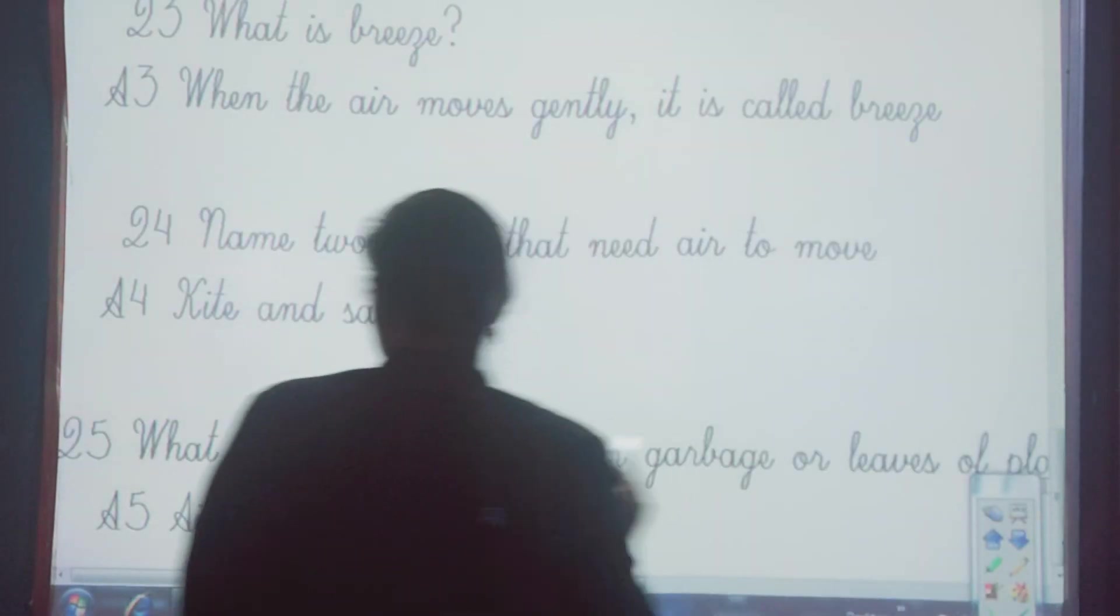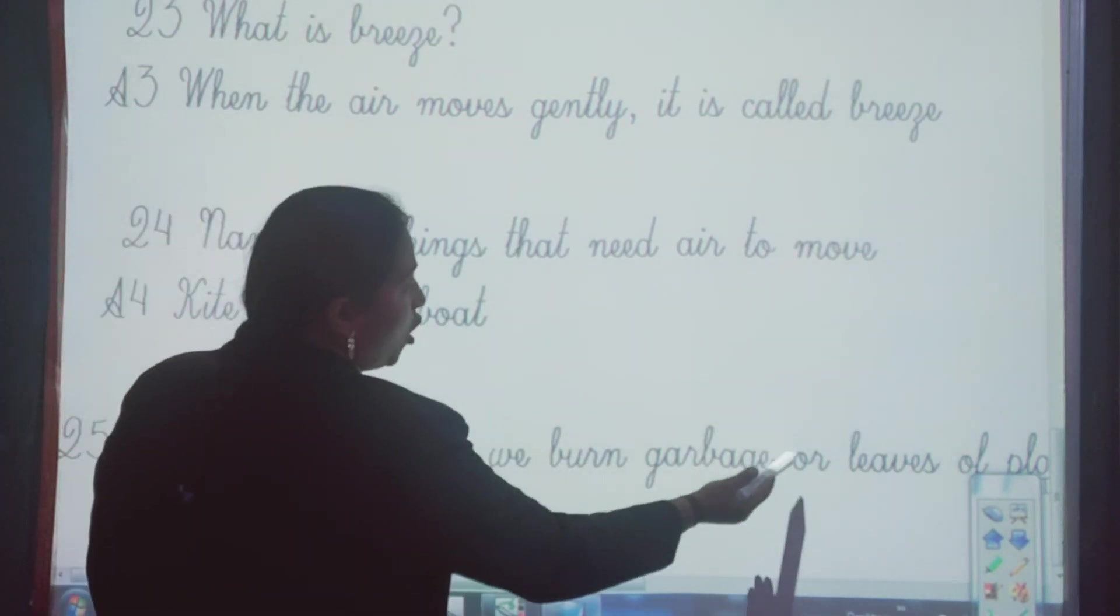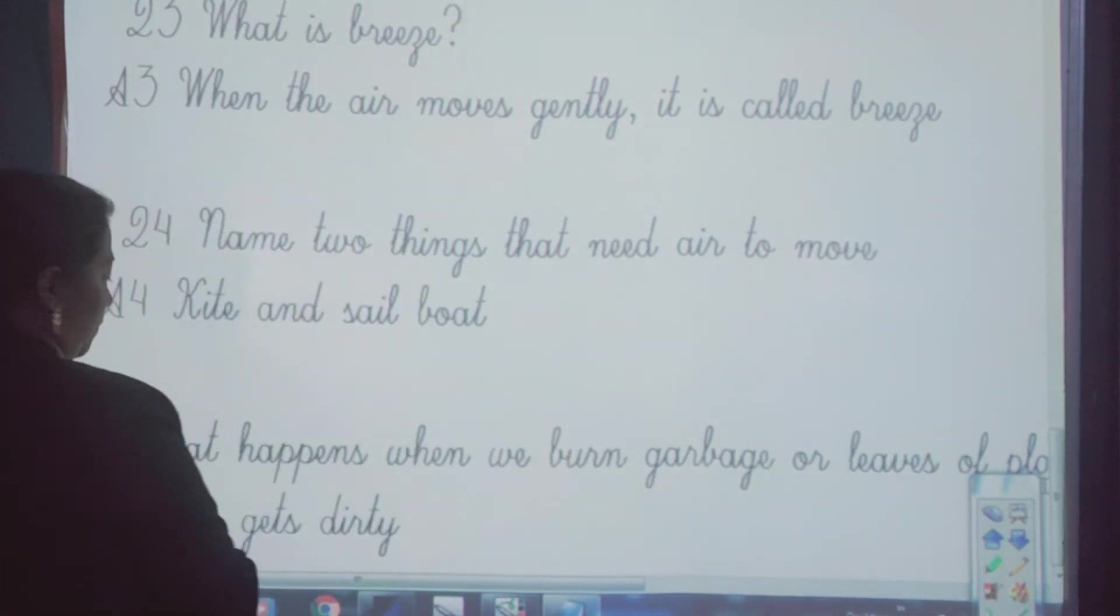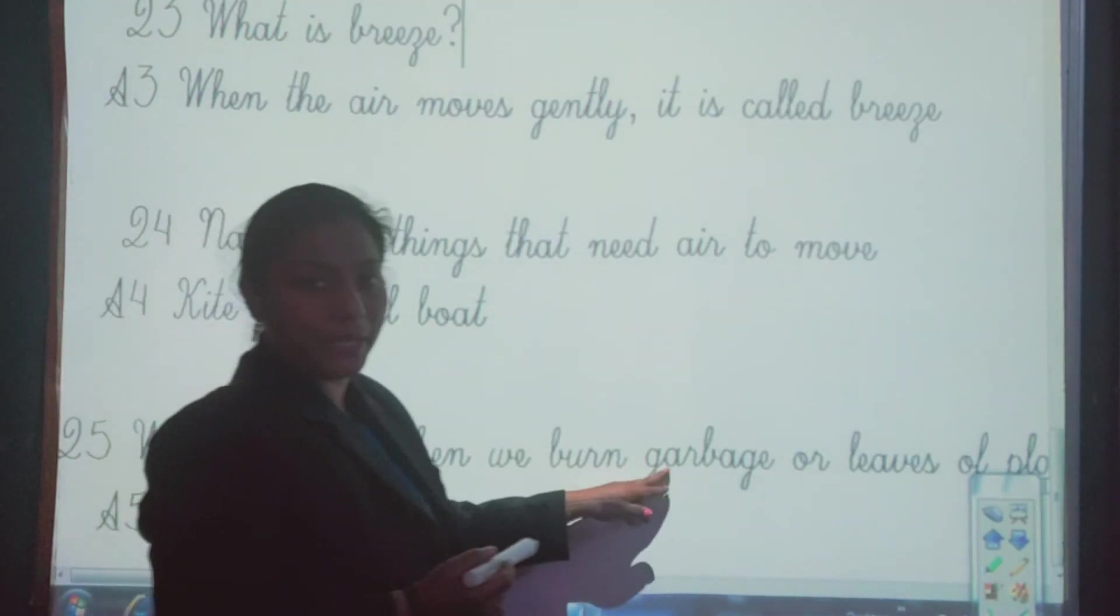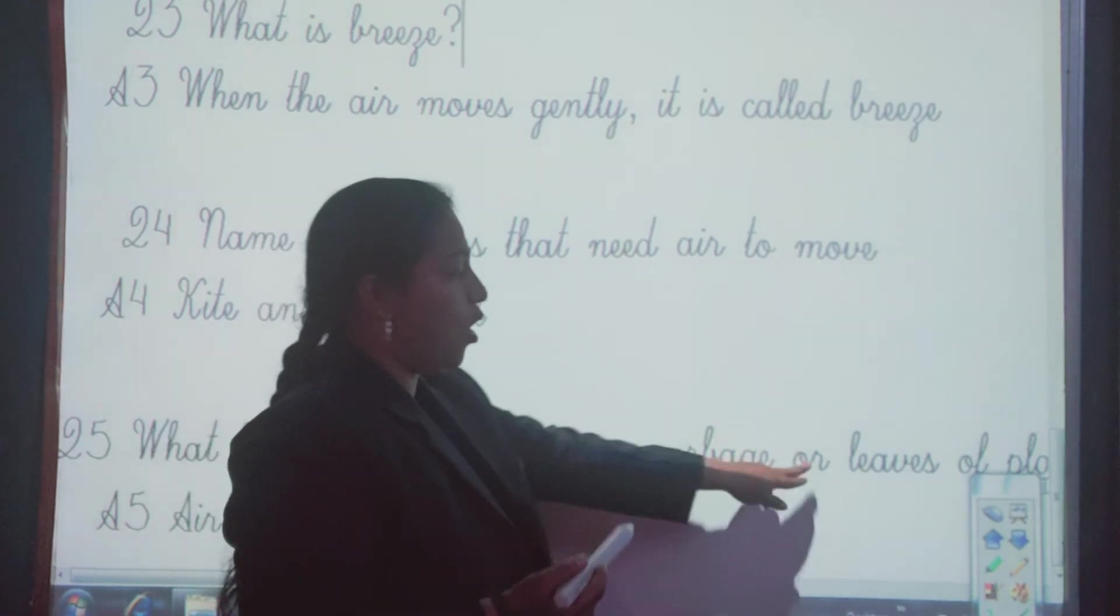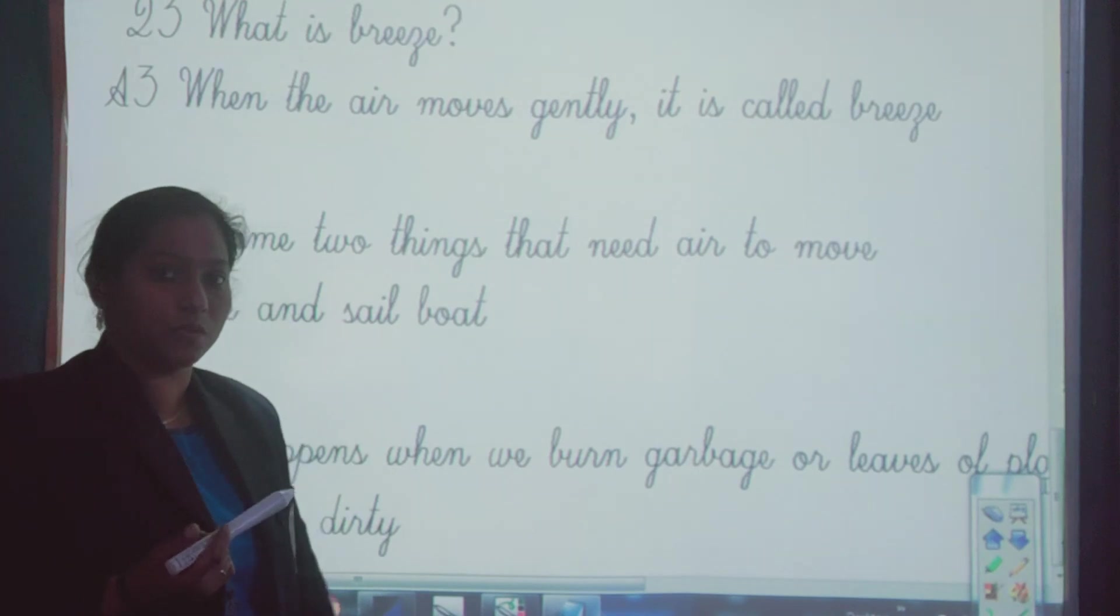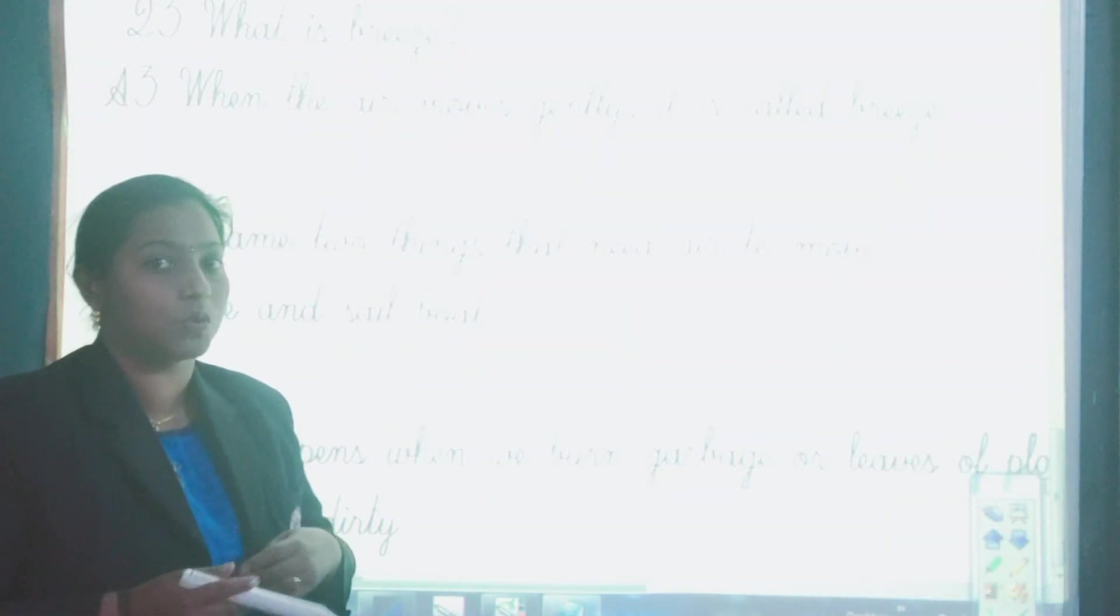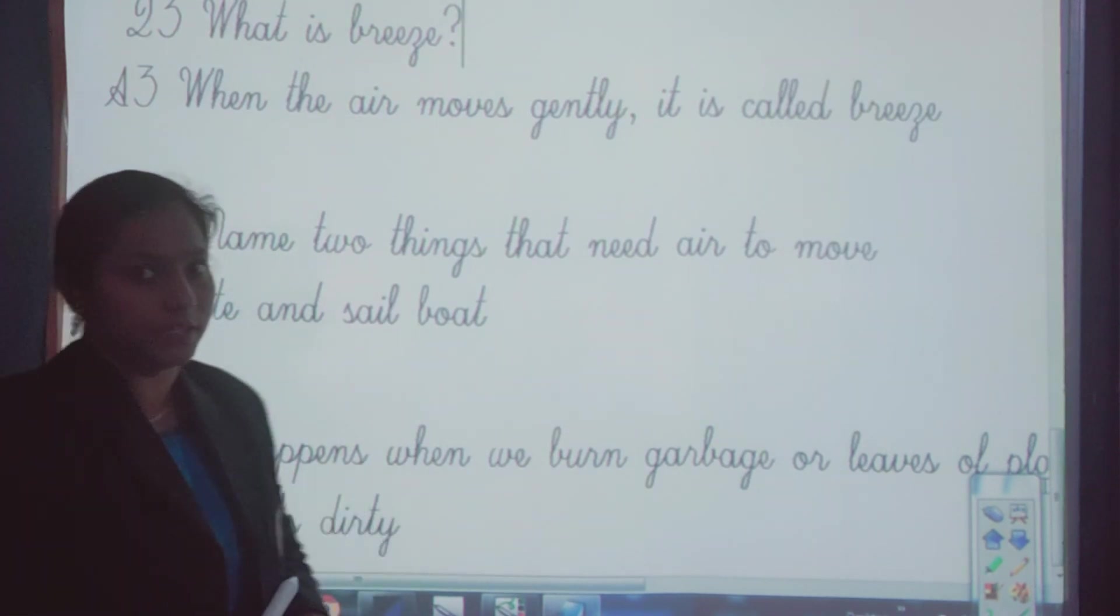Next question is, what happens when we burn garbage or leaves of plants? What happens when we burn garbage, garbage means kachra, or leaves of plants. Plants ke leaves ko hum jalate. So kya hota hai usme? Usme kya nikalta hai jab hum jalate hai? Dhua nikalta hai. And that dhua kya karta hai? Smoke kya karta hai? Air ko dirty banata hai. So the answer to this is, air gets dirty. So here we have completed the question answers.